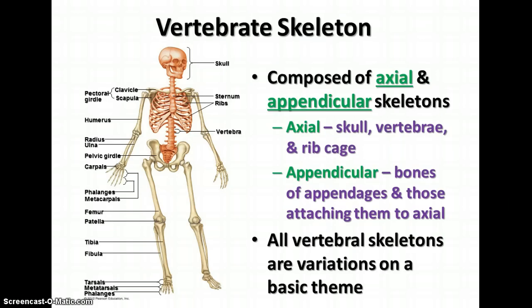The vertebrate skeleton is composed of a number of different kinds of bones. There are two main segments of the skeleton: the axial and appendicular skeletons. The axial is the skull, the vertebral column, and the ribcage — it's basically the central part of the skeleton. The appendicular skeleton is the bones of the appendages and the parts that attach them to the axial skeleton, like the pelvic girdle and the pectoral girdle.